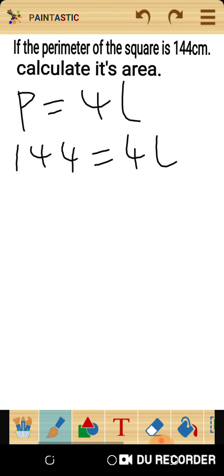To get the value of L, divide both sides by 4. So L equals 144 divided by 4, that's 36 centimeters. That's the length of the square.